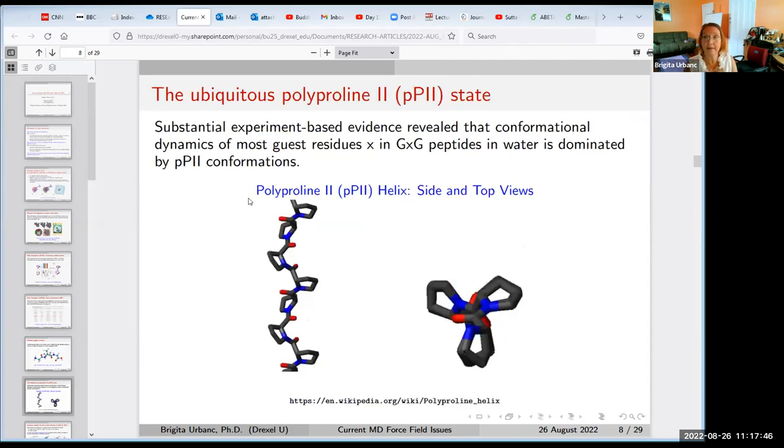One of the main things that will dominate the rest of the talk is the observation that most guest residues X in GXG peptides adopt substantial amount of polyproline II conformation. Now, what is polyproline II state? It comes from the polyproline II helix that is shown here, which is the type of a helix that is not stabilized by hydrogen bonds. It's spontaneously formed by proteins that are rich in proline.